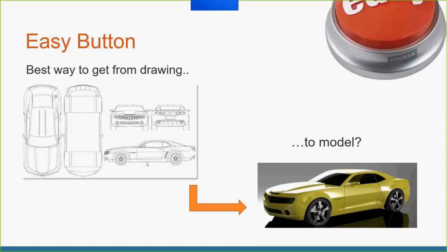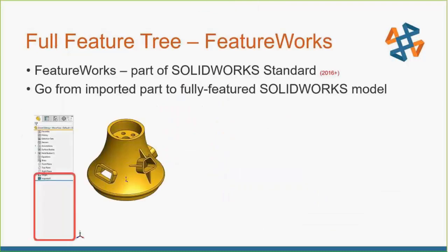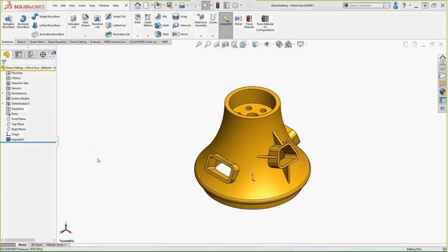Everyone knows all you have to do is hit the easy button, right? Go from drawing to CAD model is just as easy as that. Sometimes FeatureWorks is looked at that way. It's basically a tool to go from an imported part — something we're bringing in from another CAD system — and create a fully featured SOLIDWORKS model. FeatureWorks is part of SOLIDWORKS Standard, so everybody has access to it since SOLIDWORKS 2016. As you can see on screen, this imported model doesn't have a feature tree — you just get one feature called 'Imported.' FeatureWorks is the closest thing we have to the easy button. Let's see what it can do.